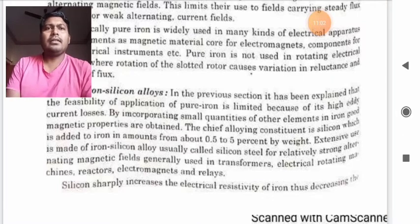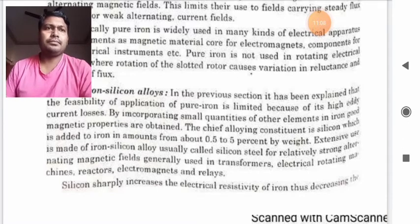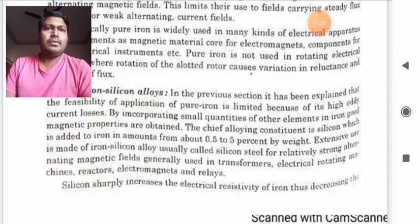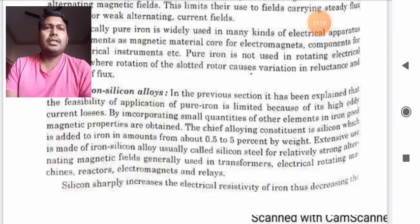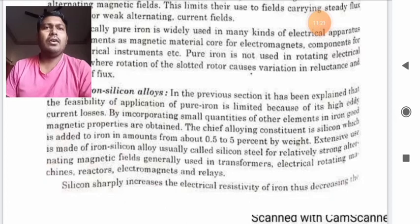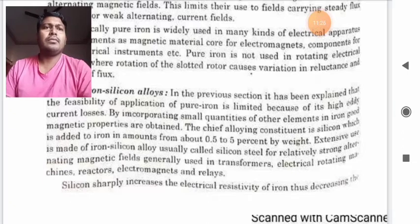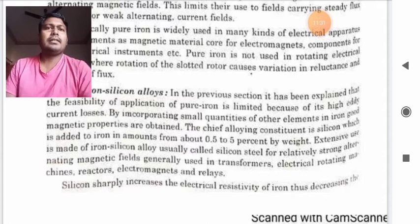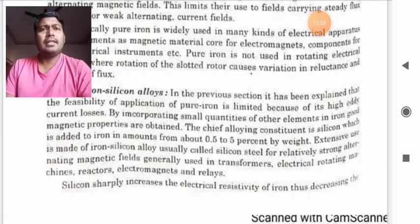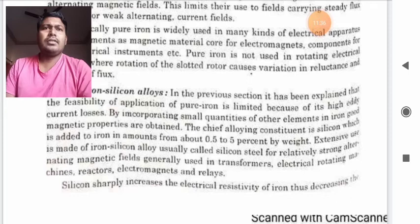Extensive use is made of iron-silicon alloy usually and are called silicon steel for relatively strong alternating magnetic fields. Generally used is in transformers, electrical rotating machines, reactors, electromagnets and relays. What are reactors? Reactors are basically coils which will increase the inductance value wherever it has been needed.